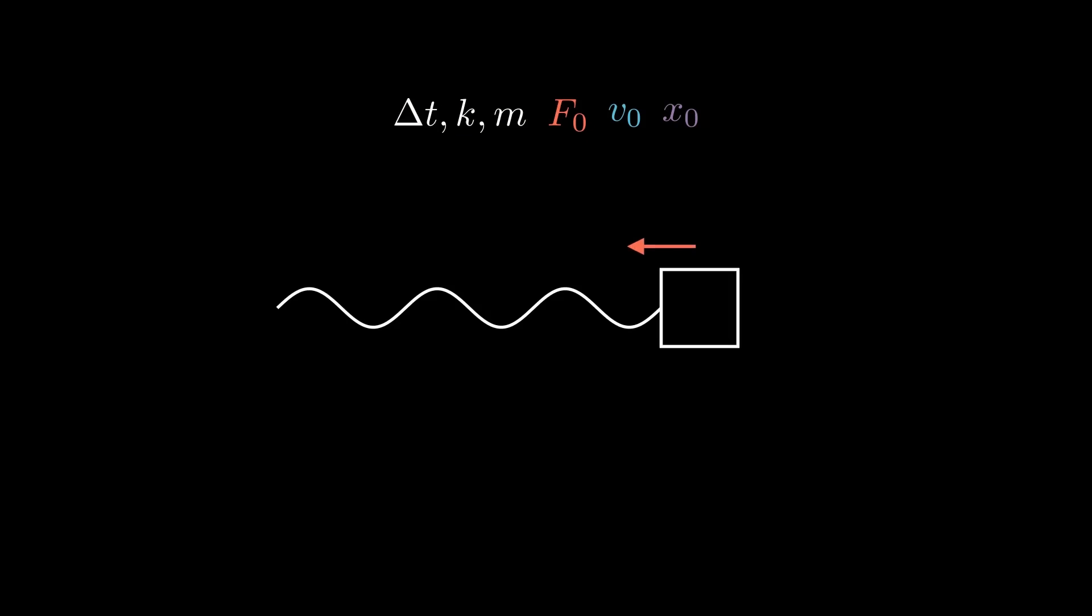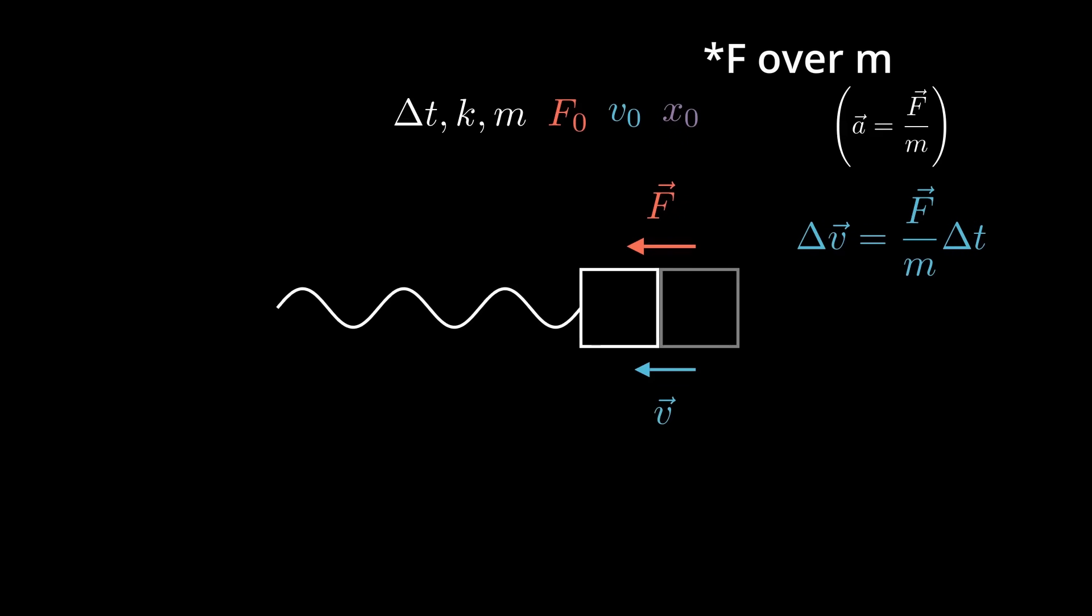At a given time displacement, the force will increase or decrease the velocity of the block by an amount f times Δt. The velocity will also increment the position—this will be by the value v times Δt. At every time step, displacement, velocity, and force will change, so we recalculate each time step.